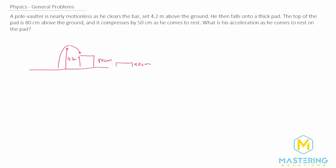The first distance is the difference between the top of the bar and the pad. He clears the bar at 4.2 meters, and the difference down to 80 centimeters, which is 0.8 meters, gives us a delta y of 3.4 meters for this first section. The delta y for the second section — the pad compression — is 0.5 meters.